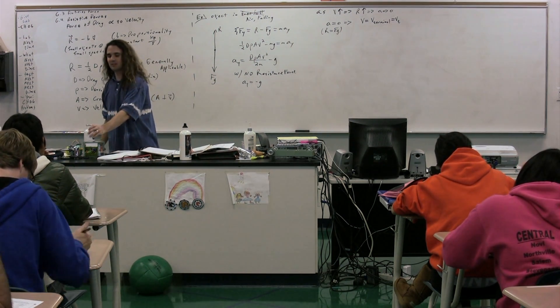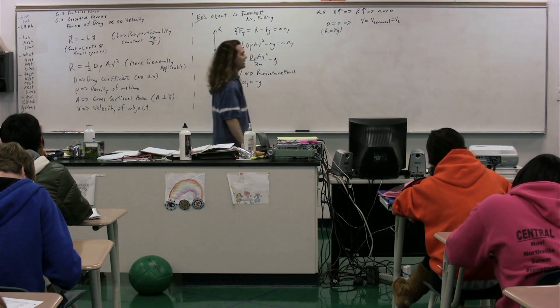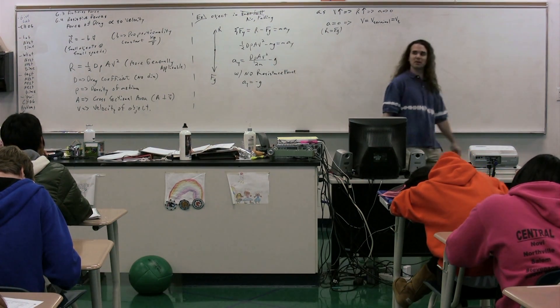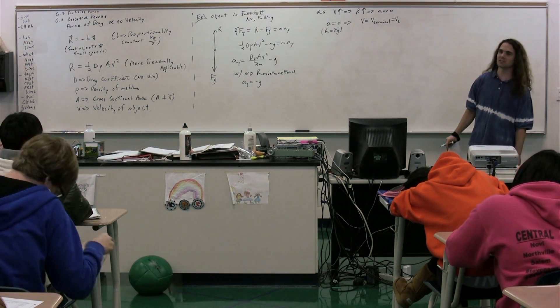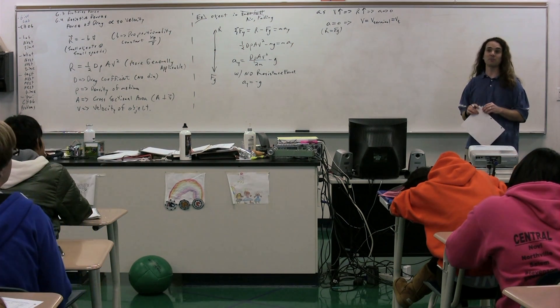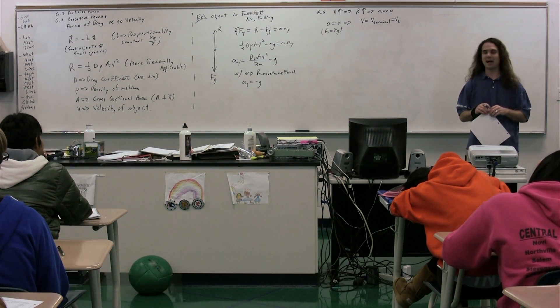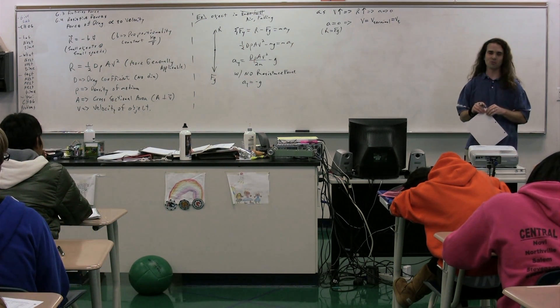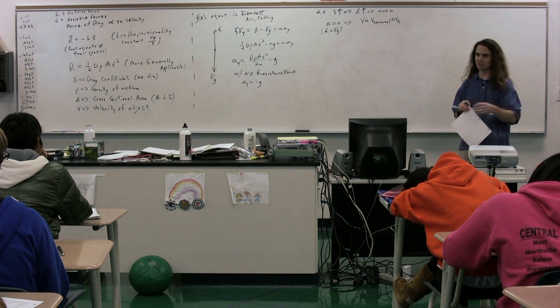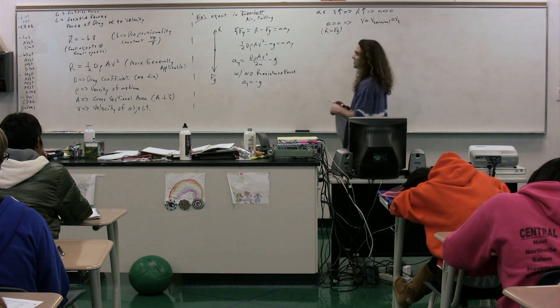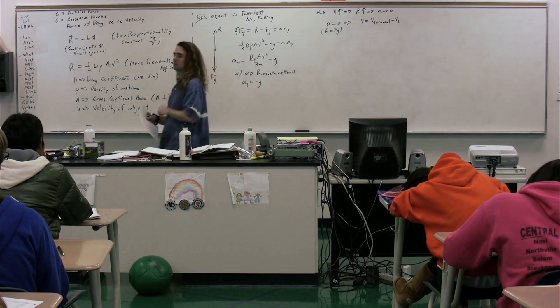And we use the subscript of t for that, v sub t. This is to be separated from tangential velocity because it's terminal velocity. Now, it would be difficult to combine both terminal velocity and tangential velocity. We could have something spinning in a circle, moving faster and faster with the acceleration in the air. That would be difficult, but fun. I have yet to see that on the AP test, so don't worry too much about this. We did two subscripts of t here. They're generally not used in the same problem. So, terminal velocity.